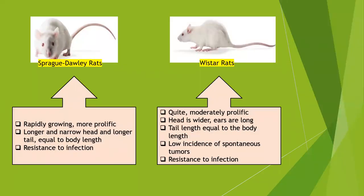There are two types of albino rats: SD rats and Wistar rats. SD rats have some distinguishing features. They are rapidly growing and more prolific. They have a longer and narrower head and a longer tail, which is equal to or greater than the body length, and they have resistance to infection.